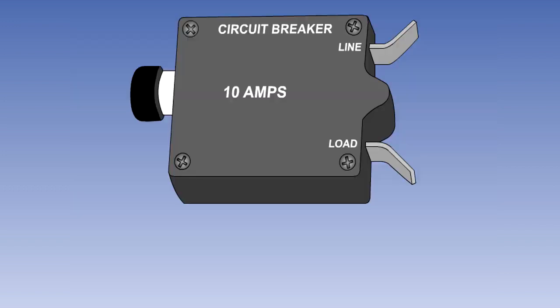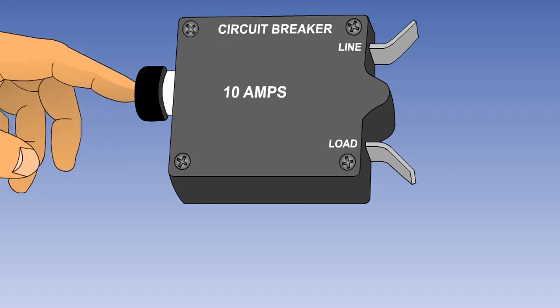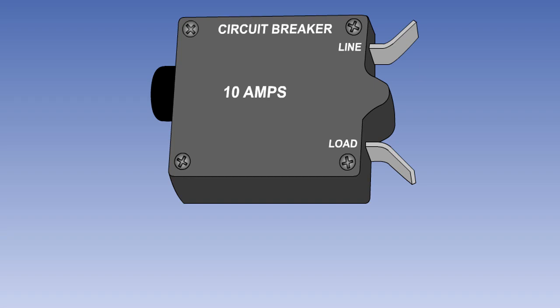Unlike the fuse, a circuit breaker may be reset after it is tripped. Like the fuse, this should be done once only. If the circuit breaker trips again, the fault must be investigated before a further reset is attempted.